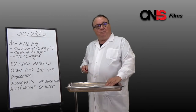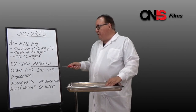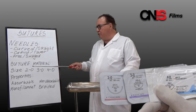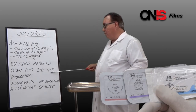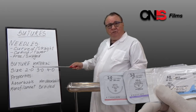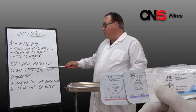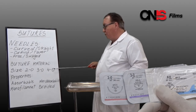Suture material — size. In minor surgery we will use the largest suture 2-0 and the smallest 4-0. Counter-intuitively, the smaller the number the larger the suture. So 2-0 is larger than 3-0, which is larger than 4-0.